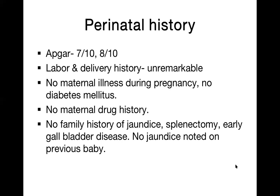The labor and delivery history was unremarkable — no maternal illness during pregnancy, no history of diabetes mellitus (important for neonatal jaundice), and no maternal drug history. Family history of jaundice was asked; there was none. No history of splenectomy or hemolytic anemia in the family, no early gallbladder disease, and no jaundice in the previous baby — she is a second-parity mother.